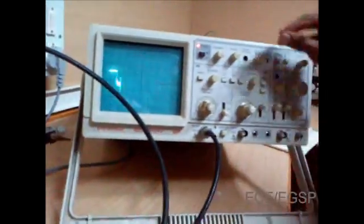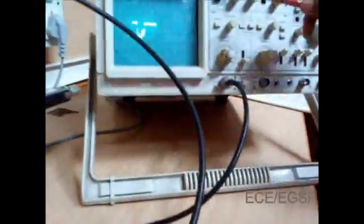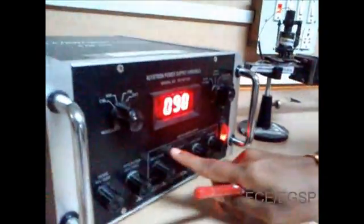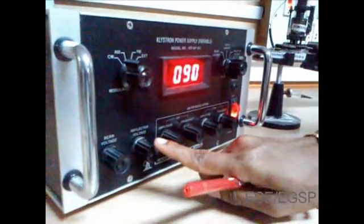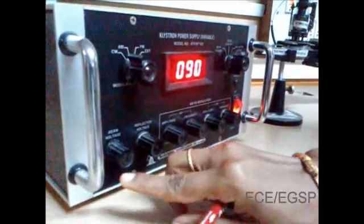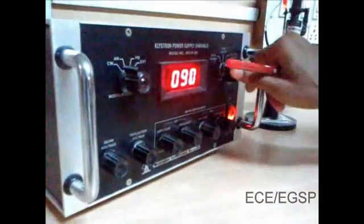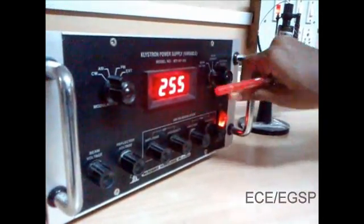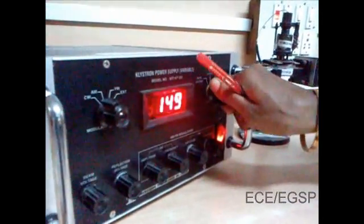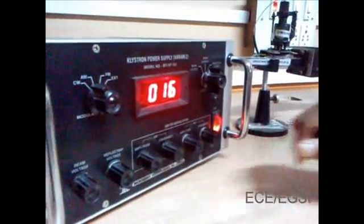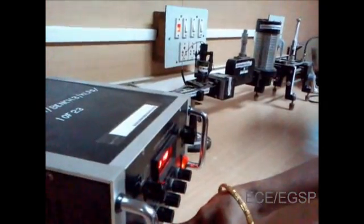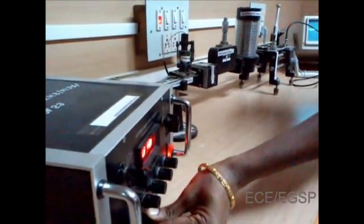The detector mount is attached to a CRO. To get a square wave in the CRO, you have to set some ranges in beam voltage level and reflector voltage level. For that, beam voltage should be 250. Beam current should not exceed 30 milliamps. By adjusting reflector voltage, you have to get a square wave in the CRO.